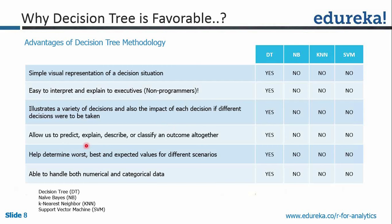It allows you to predict, classify, explain, or describe whatever outcome you're trying to achieve. If it's a numerical variable, you try to predict; if it's categorical, you try to classify. It's not going to give you only one scenario — it will also help you determine the worst case, best case, and expected values for different scenarios. The good part is it can handle both numerical and categorical data. Categorical data is a classification problem; numerical data — salaries and things like that — is a prediction problem.